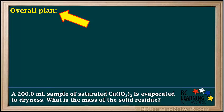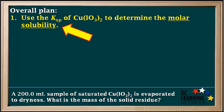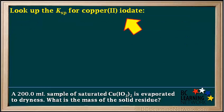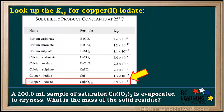We'll create an overall plan for this problem. First, we look up the Ksp of copper-2-iodate and use it to determine the molar solubility. The molar solubility of Cu(IO₃)₂ is just equal to its concentration in a saturated solution. Once we have this concentration, we convert it to moles and then to mass in grams. We find the Ksp on the solubility product constants page in the BC Chemistry data booklet: it's 6.9 × 10⁻⁸.